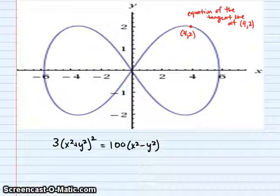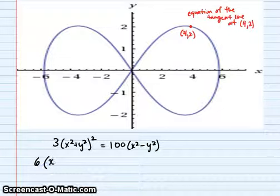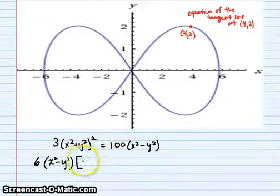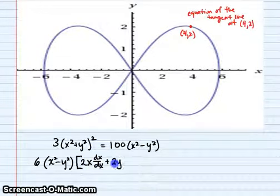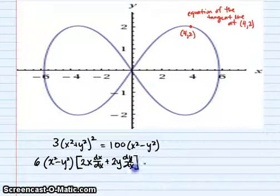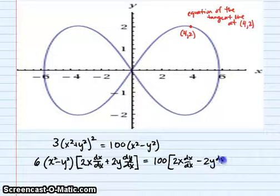The tricky part here is going to be simplifying and isolating dy/dx. We need chain rule, power rule, and a couple other things. We bring the two down so it becomes 6(x² plus y²)¹ times the derivative of the inside, which is 2x times dx/dx plus 2y times dy/dx. That equals 100 times 2x times dx/dx minus 2y times dy/dx.